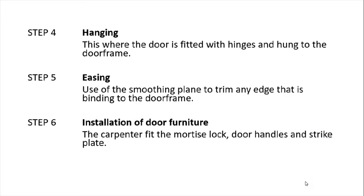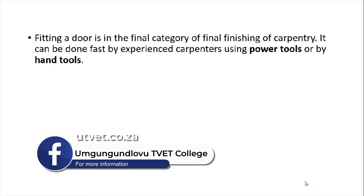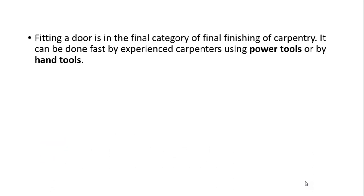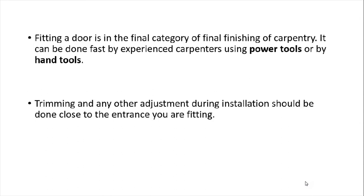The fourth step is hanging — this is where the door is fitted with the hinges and hung to the door frame. The fifth step is easing — using a smoothing plane to trim any edge that is binding to the door frame. The sixth step is installation of door furniture — the carpenter fits the mortise lock, door handles, and strike plate, and may also add a peephole and door hook. Fitting a door is in the final category of finishing carpentry; trimming and adjustments during installation should be done close to the entrance where you are working.